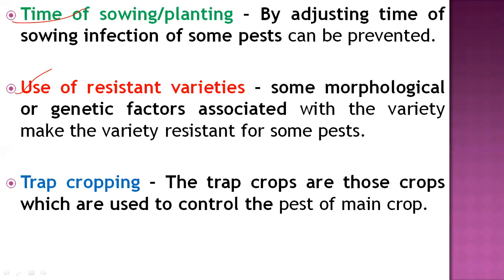The next practice is use of resistant varieties, which is a major practice related to host plant resistance. Some varieties have morphological characters such as hairiness or genetic and biochemical factors present in the plant that provide resistance to pest infestation. These morphological and genetic characteristics make certain varieties resistant to specific pests. For example, hairiness in cotton can reduce sucking pests, and certain chemical compounds in plants can reduce infestation.